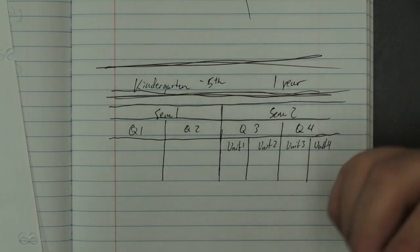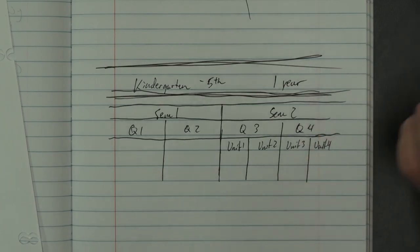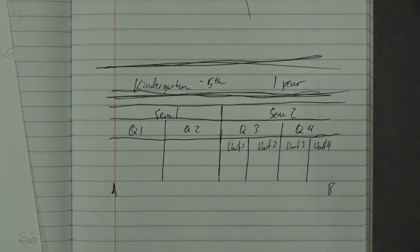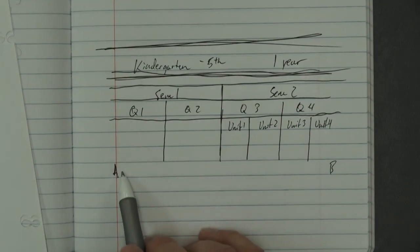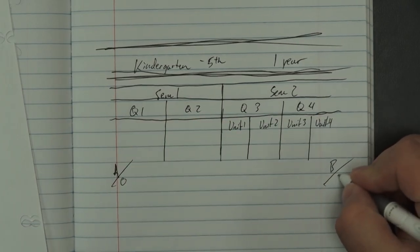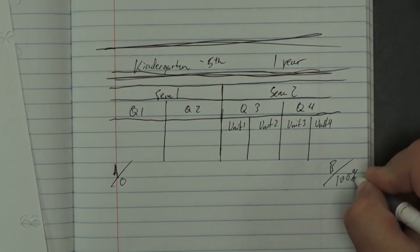You've got to think in steps: how many steps are you going to take to get from point A to point B? At the beginning they know nothing, at the end we want them to know everything, 100%.